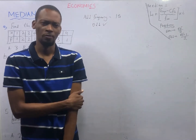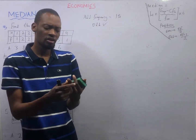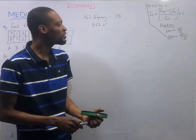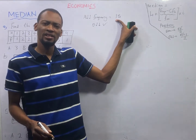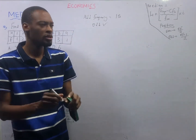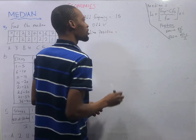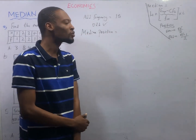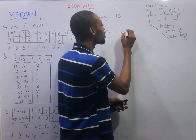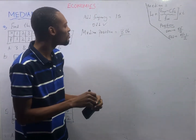Since we found out this is an odd number, the next thing to do is check the median position. If the sum of the frequency is even, simply divide it by two - that will give you the median position. But if the summation of frequency is odd, like in this case, add one to the frequency and divide by two. So median position equals: fifteen plus one is sixteen, divided by two, which is eight. This is not the median - this is the median position.